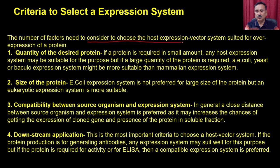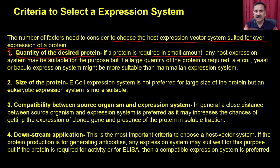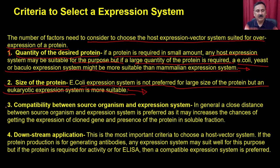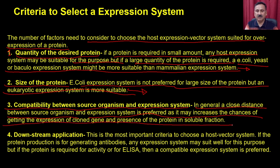A number of factors need to be considered to choose the host expression system suitable for the overexpression of a protein. The first factor is the quantity of the desired protein. If the protein is required in a small quantity, any host expression system can be suitable. If a large quantity is required, E. coli or yeast or baculovirus expression system might be more suitable than the mammalian expression system, because the mammalian expression system gives you a very small amount of protein. It also depends on the size of the protein — the E. coli expression system is not preferred for large proteins, whereas other systems are more suitable.